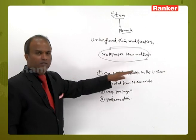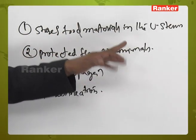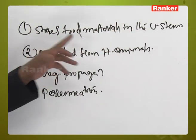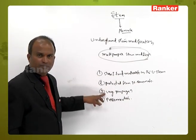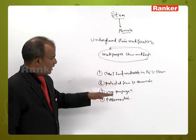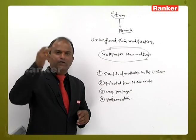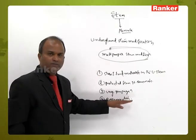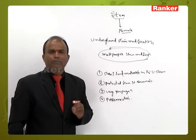The first function is that it stores food materials in the underground stems, which protects them from herbivorous animals. It also plays an important role in vegetative propagation — meaning if any part of the plant is separated from the mother plant, that separated part can grow as an individual plant. And yes, it plays an important role in perennation.